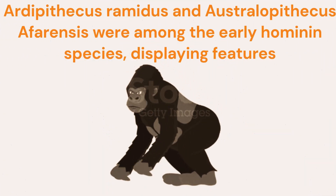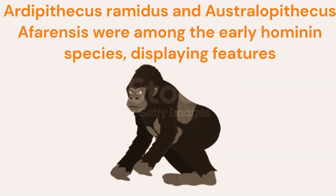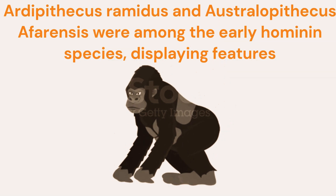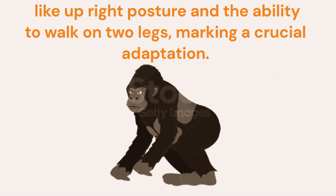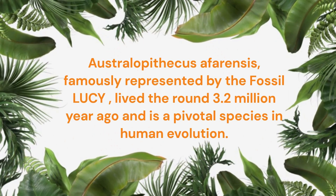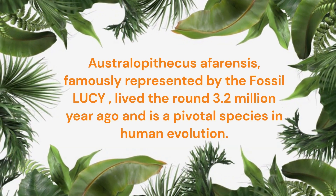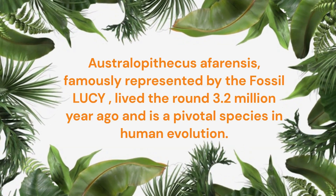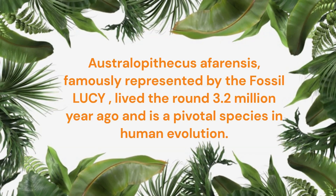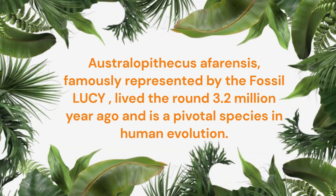Ardipithecus ramidus and Australopithecus afarensis were among the early hominin species, displaying features like upright posture and the ability to walk on two legs, marking a crucial adaptation. Australopithecus afarensis, famously represented by the fossil Lucy, lived around 3.2 million years ago and is a pivotal species in human evolution. Now we proceed to the genus Homo.